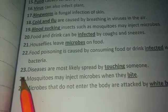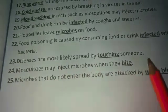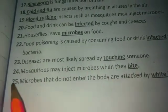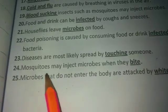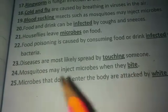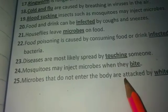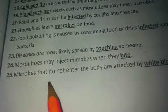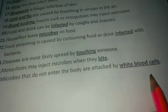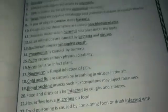Number twenty-two: diseases are mostly likely spread by touching someone — diseases لوگوں کو touch کرنے سے پھیلتی ہیں. Number twenty-three: mosquitoes inject microbes when they bite — mosquitoes جب کاٹتے ہیں تو microbes inject کرتے ہیں. Number twenty-four: microbes that do not enter the body are attacked by white blood cells.